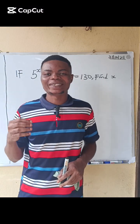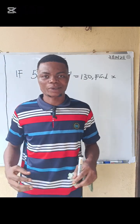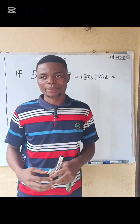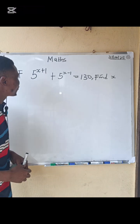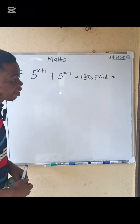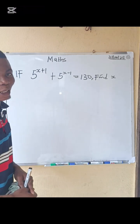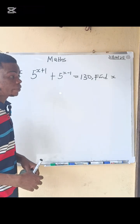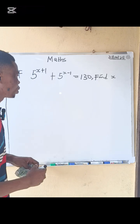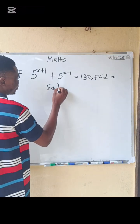Good day guys. I want to show you how to solve this simple exponential equation. Looking at the board: five to the power of x plus one, plus five to the power of x minus one, equals 180. Find x. Let's solve it right away.